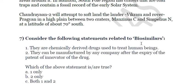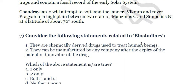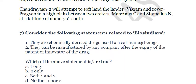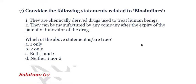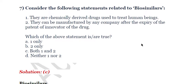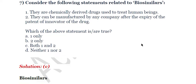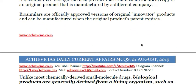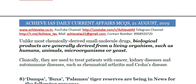The seventh question: consider the following statements related to biosimilars. First, they are chemically derived drugs used to treat human beings. Second, they can be manufactured by any company after the expiry of the patent of the innovator of the drug. Both statements are correct. Biosimilars are drugs used to treat human beings, and they can be manufactured by any company once the innovator's patent expires. Notably, biosimilars are derived from living organisms — for example, human beings or bacteria — for the purpose of treatment. The answer is C.